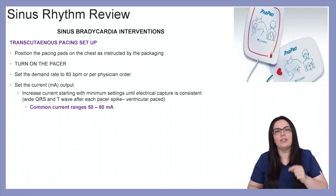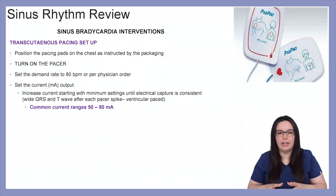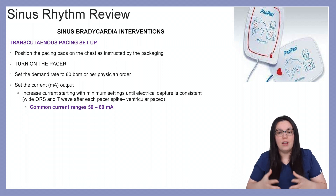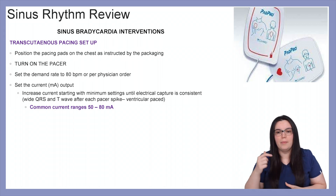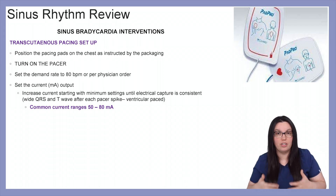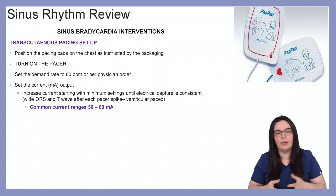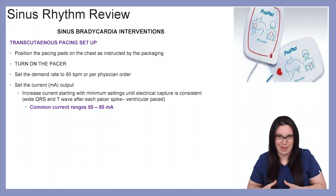Set the current mA output — increase the current starting with a minimum setting and move up until electrical capture is consistent, which would be a wide QRS and a T wave after each pacer spike, indicating that our patient is ventricular paced. Common current range is between 50 to 80 mA.